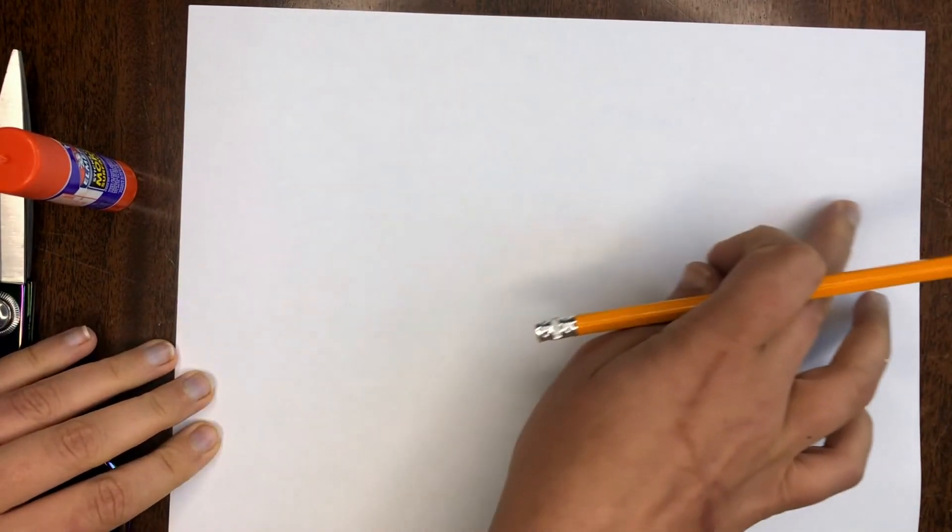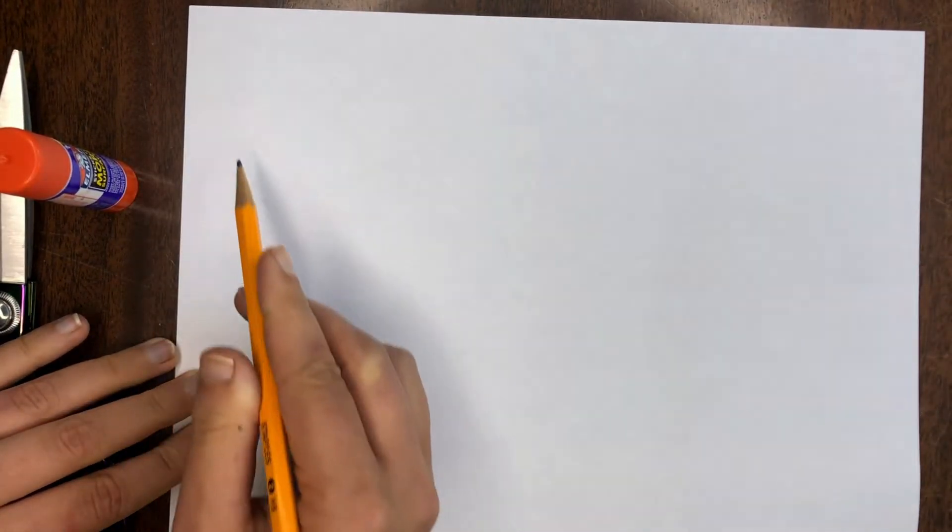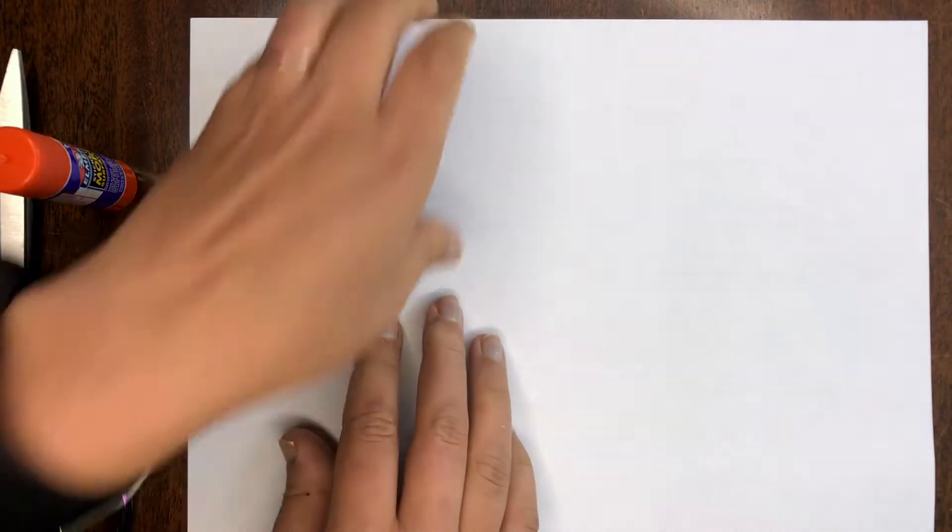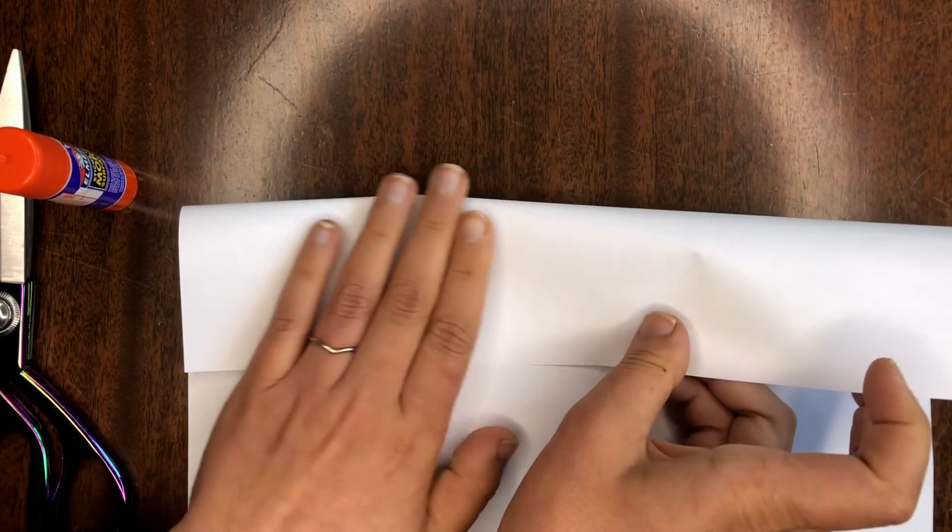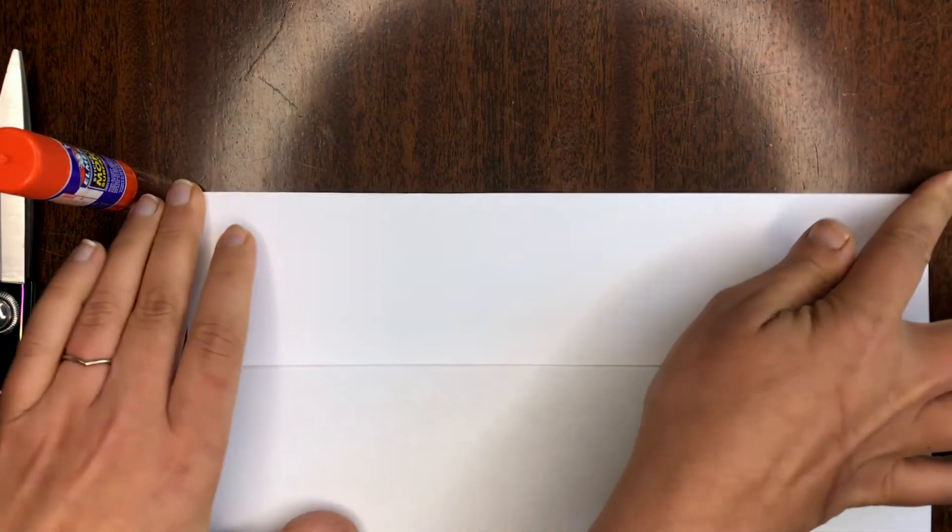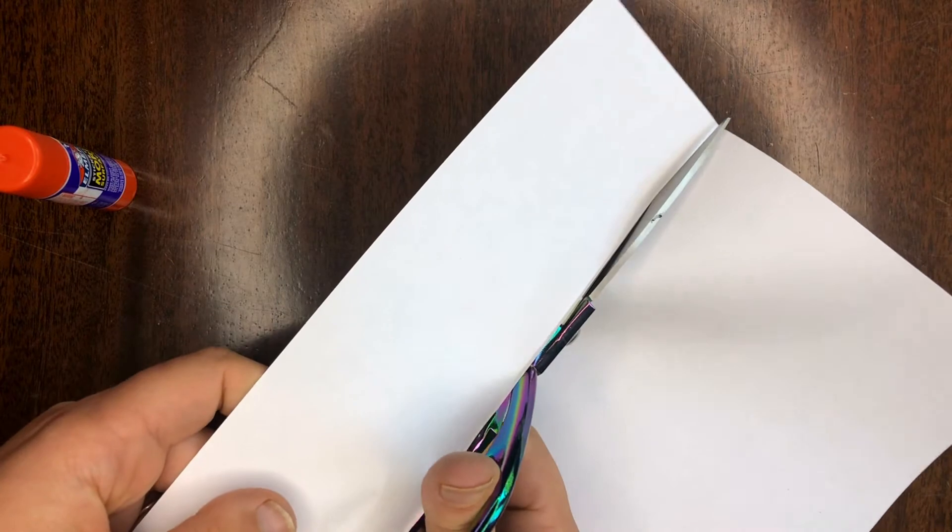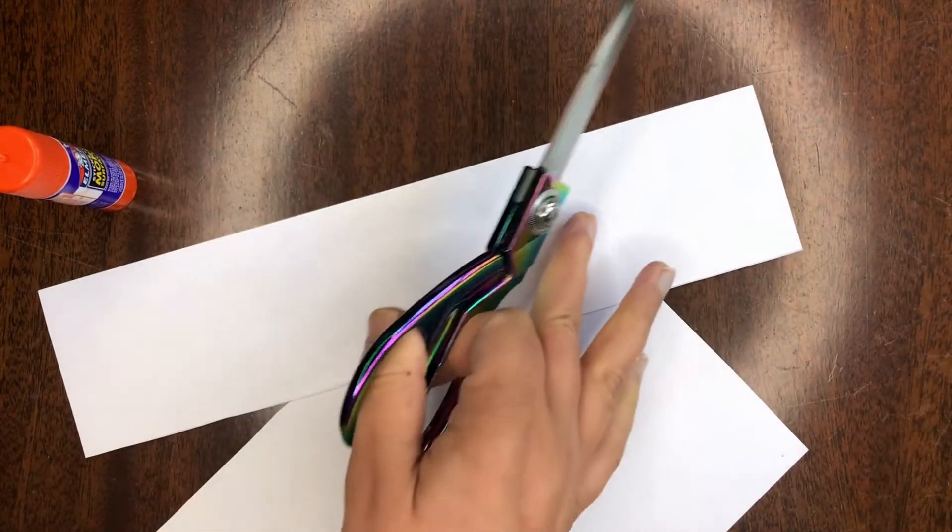For this cat, we're gonna need a long piece of paper. So we're actually just going to draw a straight line or you can fold it and we're gonna cut a strip off and it can be any color you want but this will be the width of our cat. So I'm gonna fold it right there. I'm gonna cut it on this line and you can color your paper the color of your fur beforehand or you can do it after.